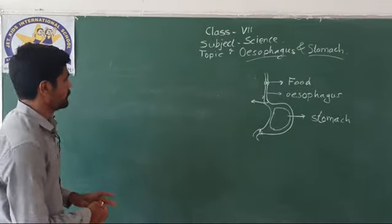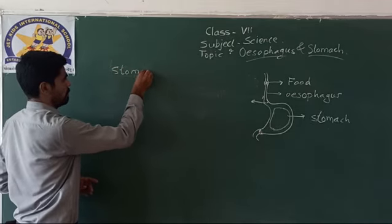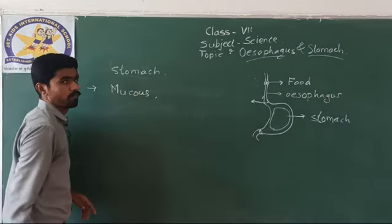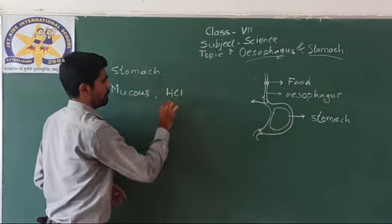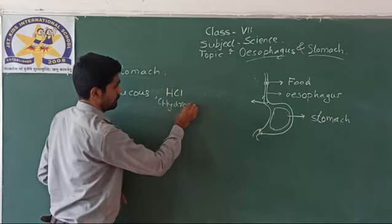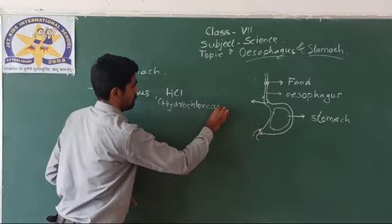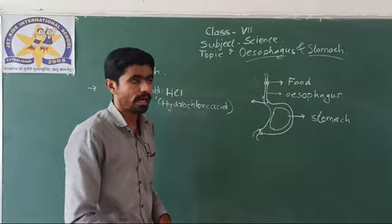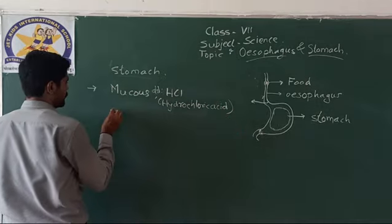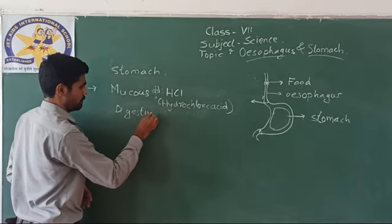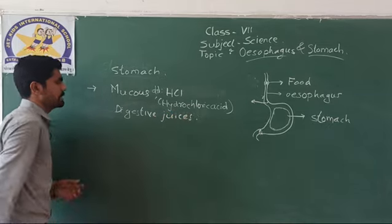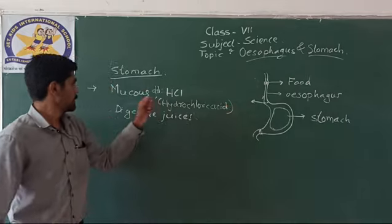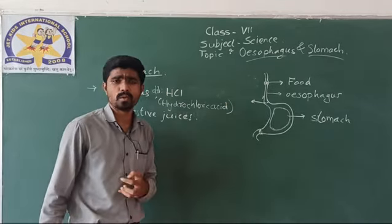What are the functions of the stomach? First of all, the inner lining of the stomach secretes mucus. It also secretes HCl — that is hydrochloric acid — in dilute form, not in concentrated form. And it also secretes other digestive juices. So the lining of the stomach is producing mucus, HCl, and digestive juices.